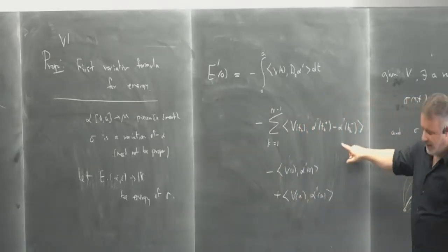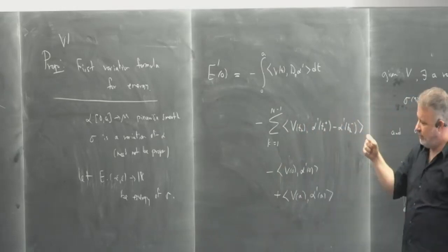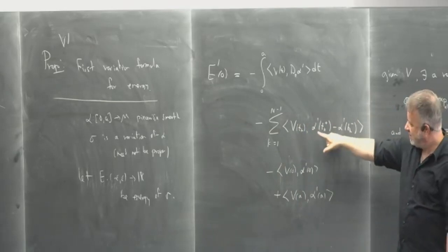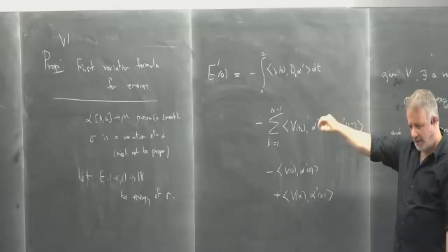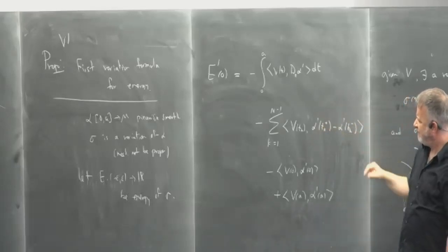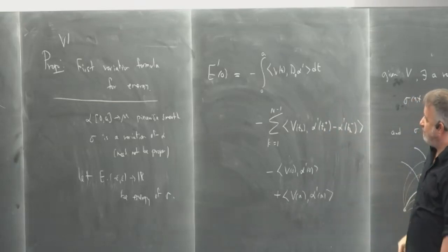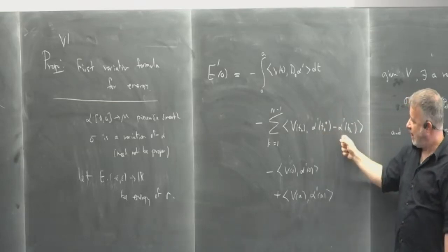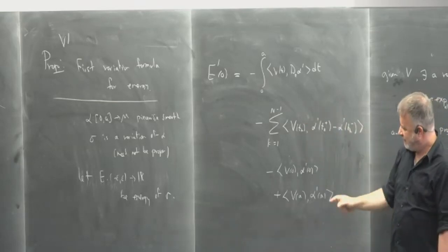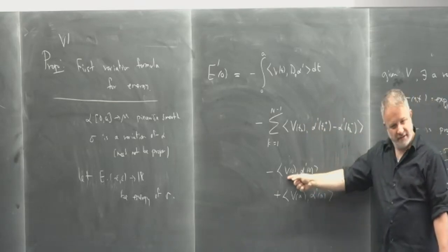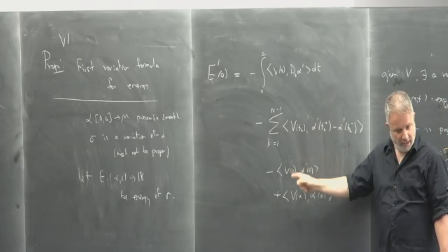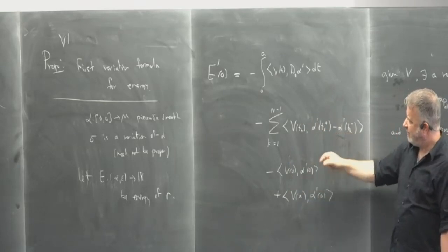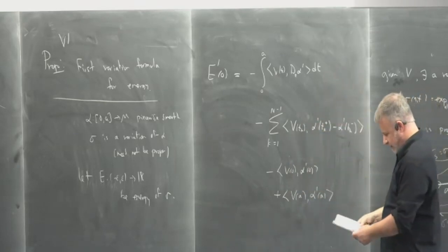Alpha is piecewise smooth and can have jump discontinuities in the velocity at the T_k's, so alpha prime doesn't have to be continuous. This notation refers to the limit of alpha prime coming from the right and from the left — this is the jump in the velocity alpha prime. If alpha was smooth, there are no jumps in alpha prime, so that middle term is gone. If the variation is proper, then V of zero and V of A are zero, so those endpoint terms vanish. So if you have a smooth curve and a proper variation, you only get the first integral term.